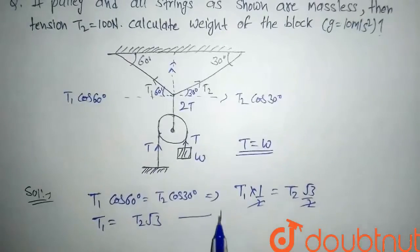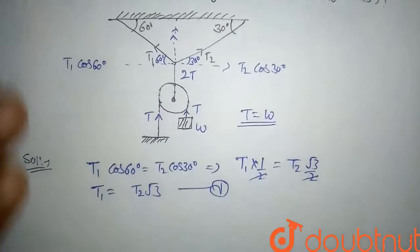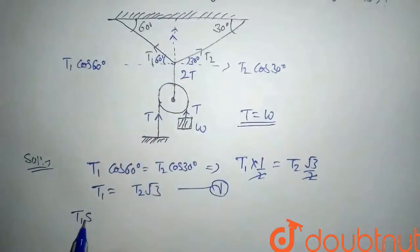This will get cancelled out. Let's say this is our equation first. Now take the vertical component. So the vertical component will be T1 sin 60